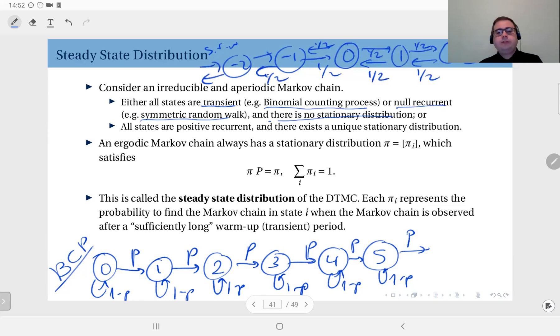So here all states are recurrent. That means the probability that you will return to any state you have left is one. However, the expected time of that return diverges to infinity. Therefore, each of the states here in the symmetric random walk are null recurrent. So there doesn't exist a stationary distribution in these two scenarios.